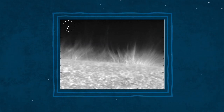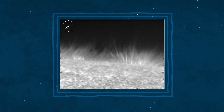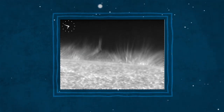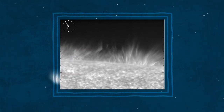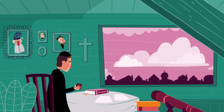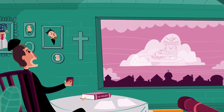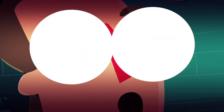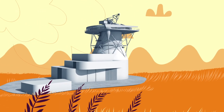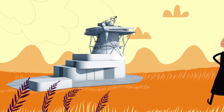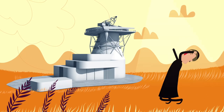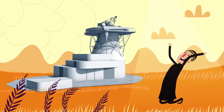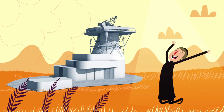Allerdings glauben Astronominnen und Astronomen, dass Spikulen jede Menge Energie in die Sonnen-Corona leiten und sie so aufheizen. Um diese Idee zu bestätigen, brauchen wir Instrumente, welche die Magnetfelder in den Spikulen messen können, bevor sie wieder verschwinden. Das Europäische Sonnenteleskop wird es uns ermöglichen, Spikulen und ihre Bedeutung für die Corona-Heizung zu verstehen. Und zu guter Letzt werden die Träume von Secchi und anderen wahr.